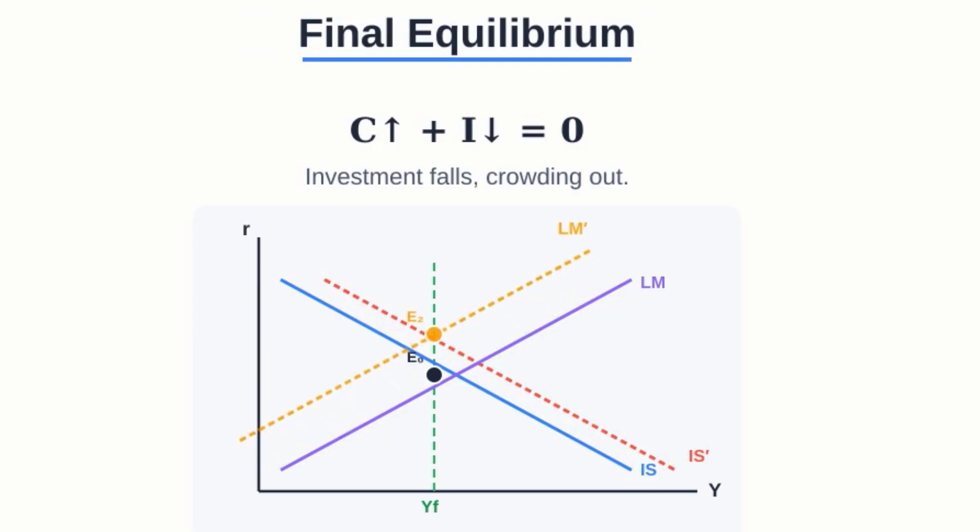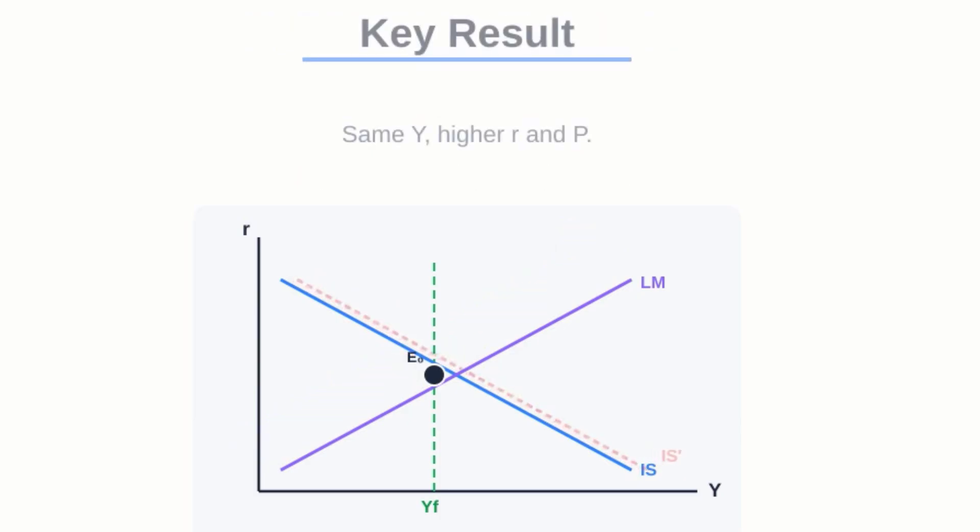Basically, all that extra consumer spending gets paid for by sacrificing business investment. So to wrap it all up, a tax cut when the economy's at full employment doesn't actually grow the pie. It just swaps future investment for spending right now and drives up prices and interest rates in the process. And that really shows you the limits of that kind of fiscal policy.